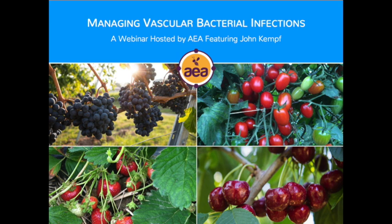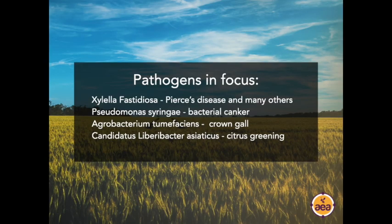I'm going to be framing the conversation today around four primary diseases: Xylella fastidiosa, which grape producers know as Pierce's disease but is also the causative organism for over 500 other diseases globally; bacterial canker, Pseudomonas syringae; crown gall in walnuts, Agrobacterium tumefaciens; and citrus greening. The information I'll be talking about on how to manage these diseases is not just specific to these four — I'm using these four as specific examples, but the concepts really apply to all of these vascular bacterial infections.